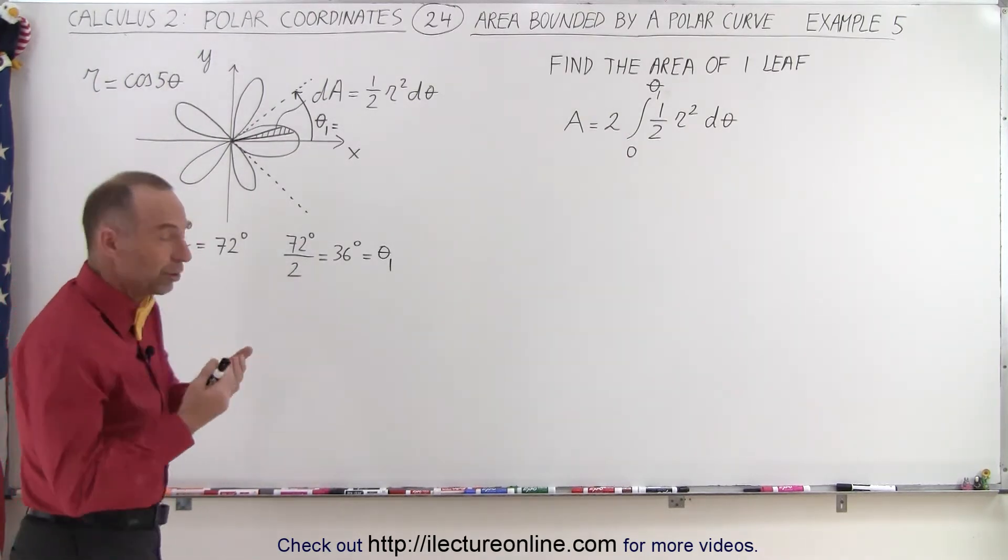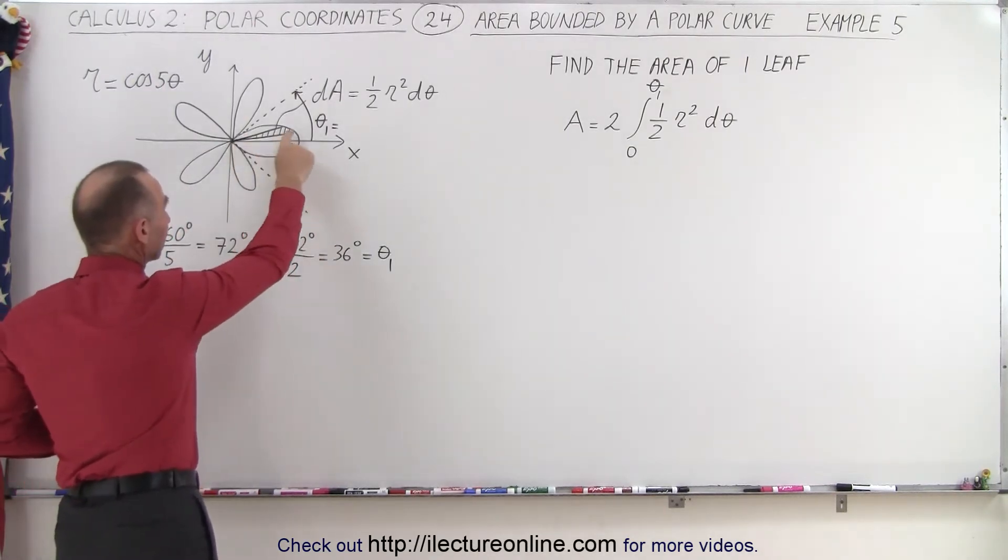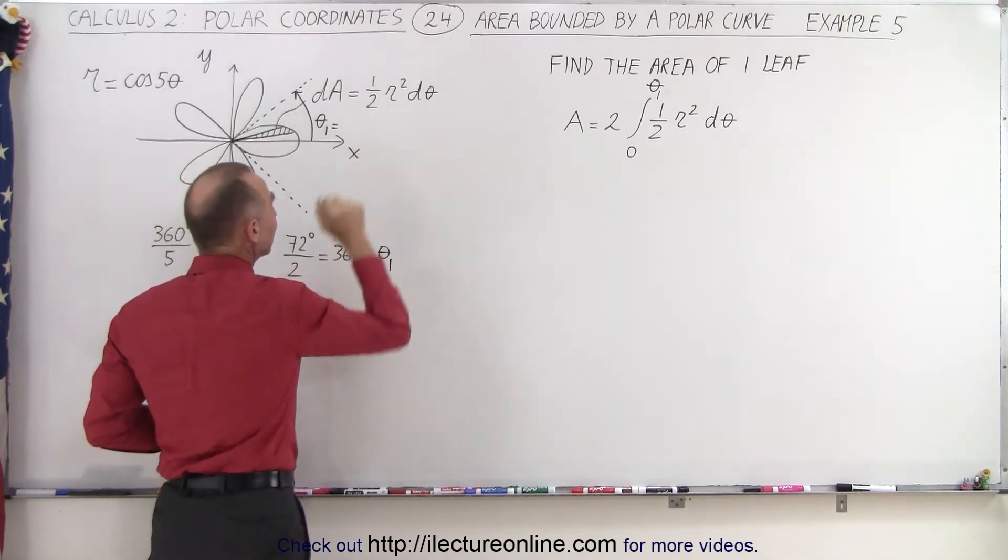So the general approach is to draw a small area element, dA, which is in the shape of a triangle, so the area is one-half r squared times d theta.